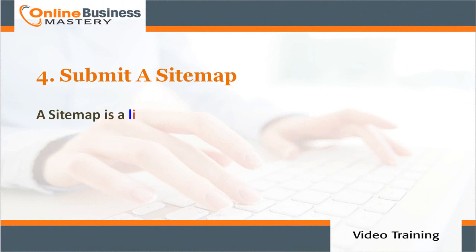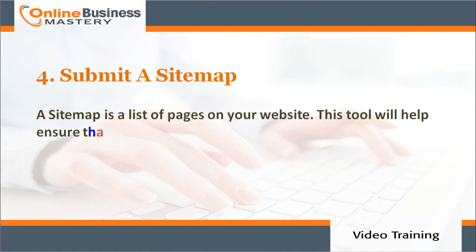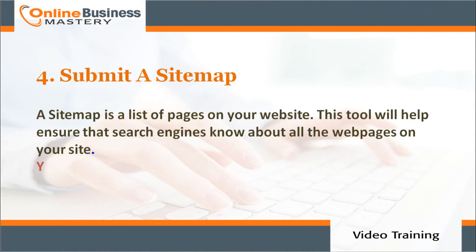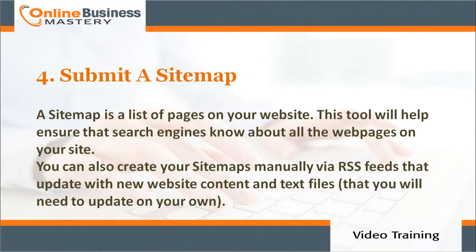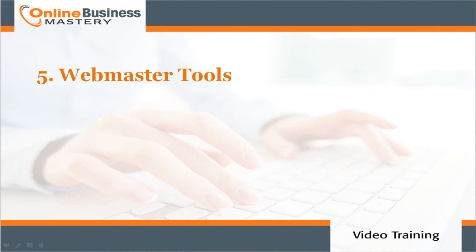Number three: authority — backlinks, longevity, and site age. Number four: submit a site map. A site map is a list of pages on your website. This tool helps ensure that search engines know about all the web pages on your site. You can also create your site map manually via RSS feeds that update with new website content, or text files that you update on your own.